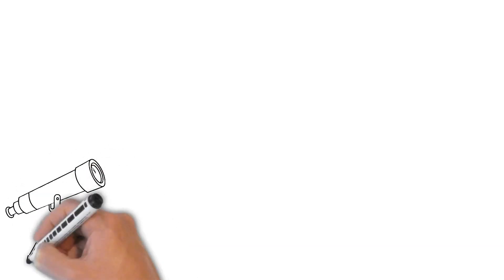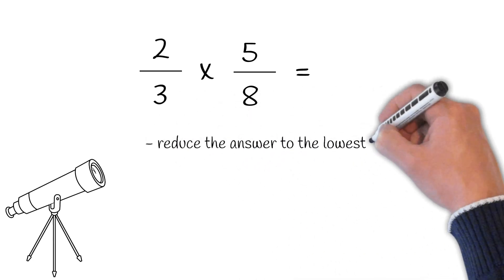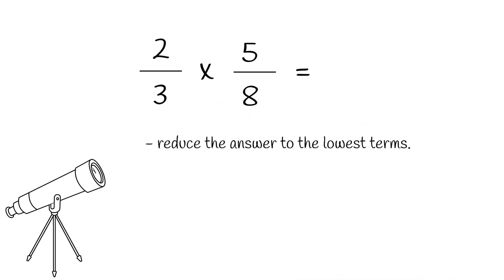Let's try another example. 2 over 3 times 5 over 8. Sometimes, when you multiply fractions, you may be able to reduce the answer to the lowest terms. And as a math rule, our answers must be in reduced fractions.